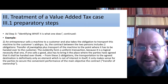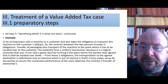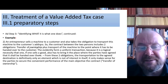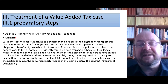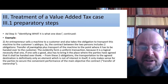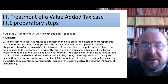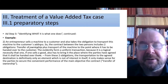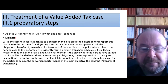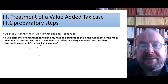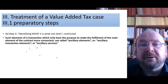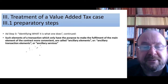From these two obligations, the transportation to the agreed destination is definitely not the main element — it is just an element which is necessary so that the main aim, I want to become the owner of this machine, can be fulfilled. Transfer of ownership is the decisive element. Such elements of a transaction which only have the purpose of making the fulfillment of the main element possible or more convenient are called ancillary elements, or ancillary transaction elements, or ancillary services — whatever you call them. The decisive thing is that they have minor importance.